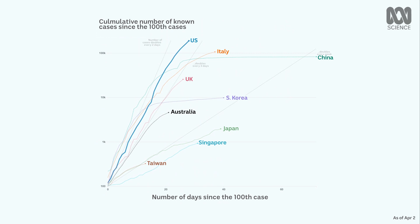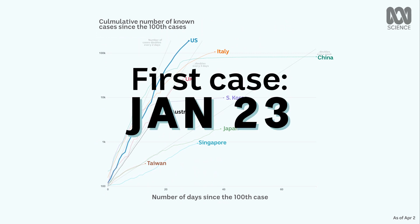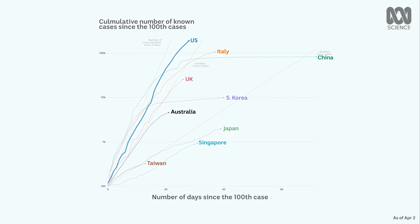The US began screening travellers from Wuhan on January 17, and the first case was reported a few days later. It stopped visitors who had been in China from entering the US on January 31, and citizens who had been in China had to self-quarantine for 14 days. By mid-February, case numbers were up to 15, but by that stage, only 54 tests had been done. The US bungled the rollout of COVID-19 testing through a combination of flawed tests and bureaucratic red tape. By March 4, it had passed its 100th case, but had still only done just over 1,000 tests, at a time when the Korean government was testing 20,000 people per day.